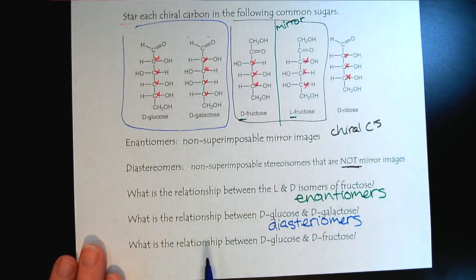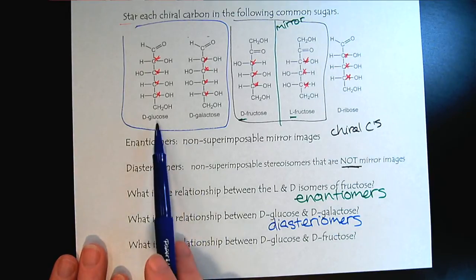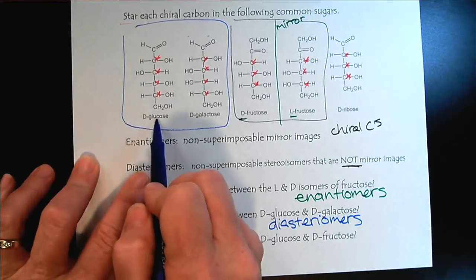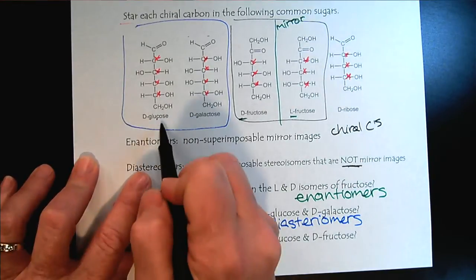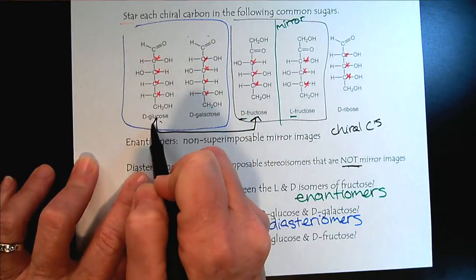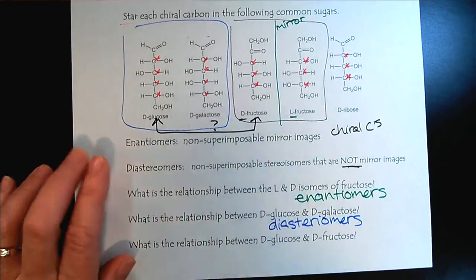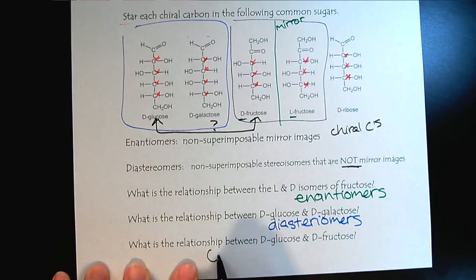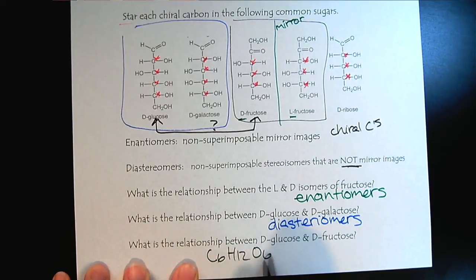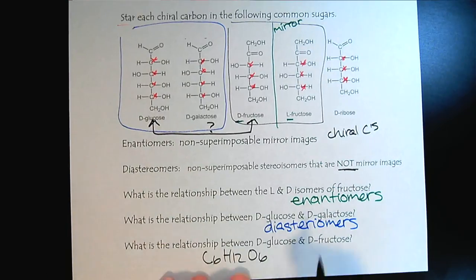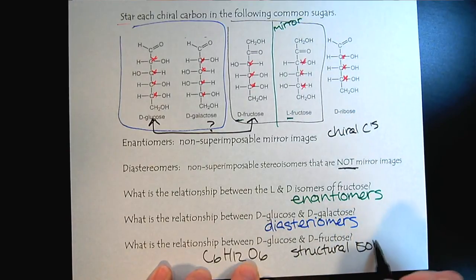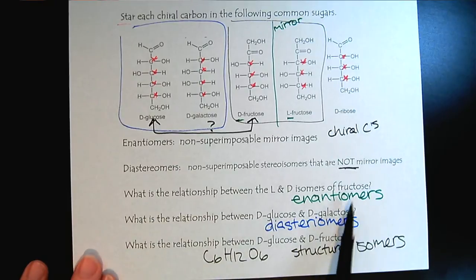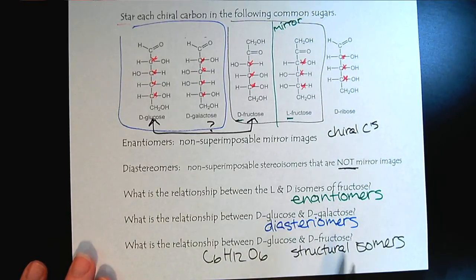And then let's remind ourselves what would be the best term to describe the relationship between D-glucose and D-fructose. Well, from one of our earlier tutorials, we realized that they both have the chemical formula C6H12O6, but they have very different connections. So they are structural or constitutional isomers. So we have an example of stereoisomers and structural isomers in the sugars.